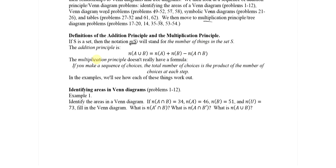There isn't really a formula for the multiplication principle. It's just saying if you make a sequence of choices, then the total number of choices is the product of the number of choices at each step. This works out and is a little clearer once you see it in an example or two.